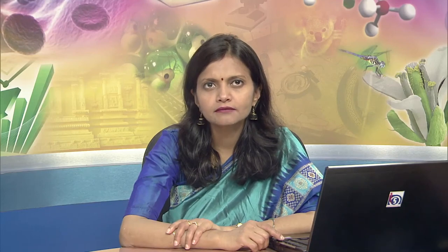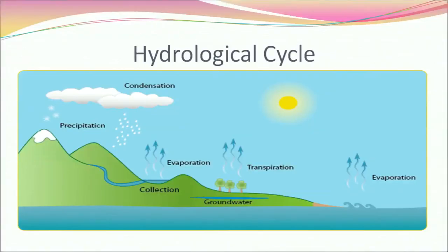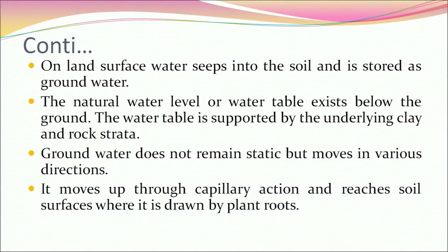The hydrological cycle helps in the exchange of water between air, land, sea, and living plants and animals. Solar energy drives this cycle. Massive evaporation from oceans, cloud formation and rainfall gives us supplies and reserves of fresh water. At sub-zero temperatures, rainwater freezes into snow, and in the presence of strong winds forms hail. Water as rain, snow and hail is precipitated on land and water surfaces. On land, water seeps into the soil and is stored as groundwater, supported by underlying clay and rock strata. Groundwater moves via capillary action and is drawn up by plant roots.